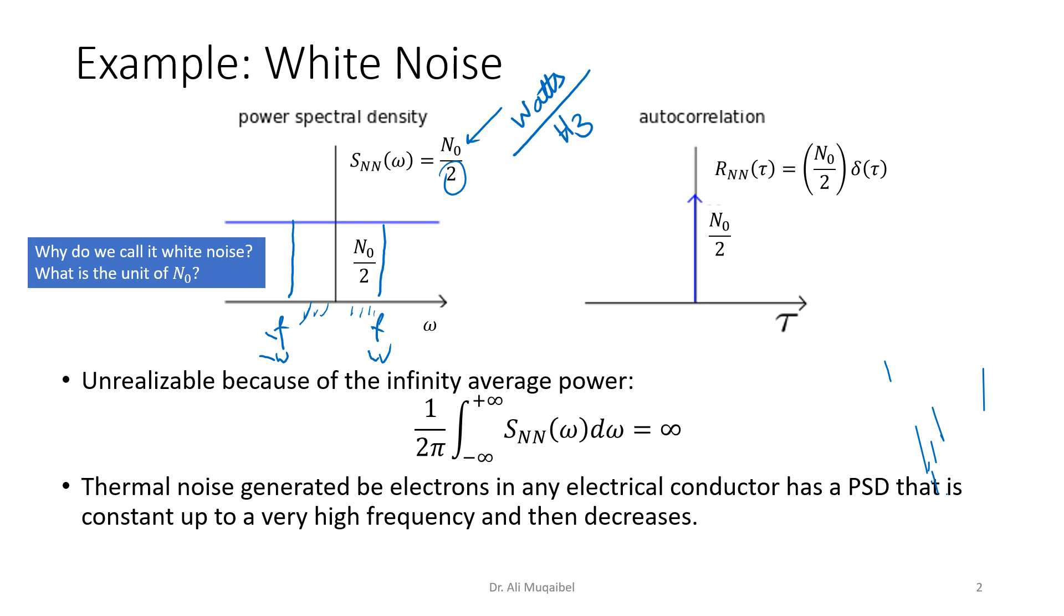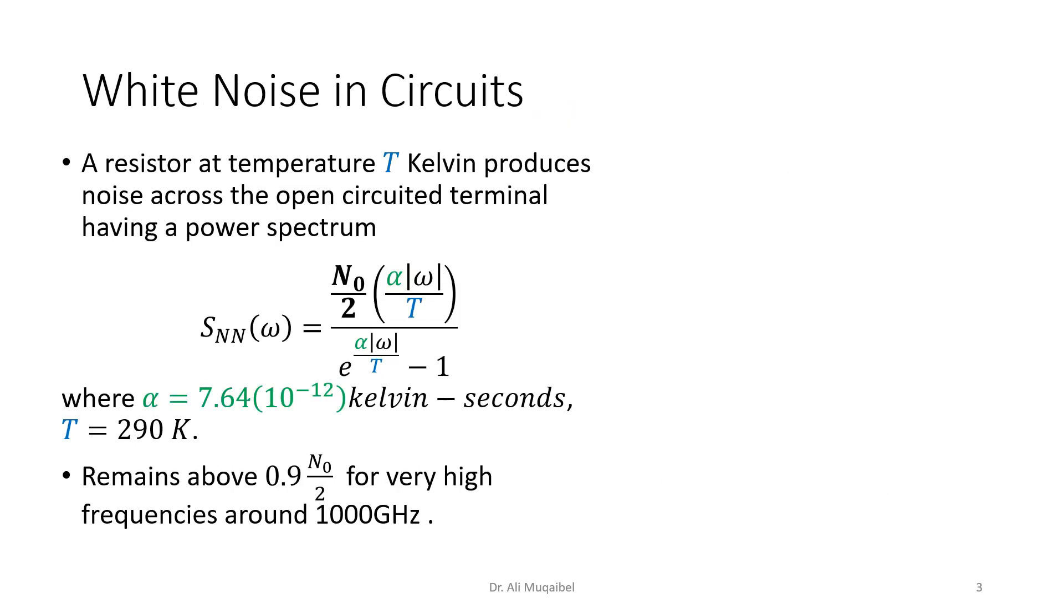White noise in circuits: a resistor at temperature T kelvin produces noise across the open circuit terminals. This is a resistance, and if you apply a voltage, you'll find that there is noise generated here with a specific magnitude, where T is temperature in kelvin. Alpha is a constant. We know its value in kelvins per second, and n₀ is in watts per hertz.